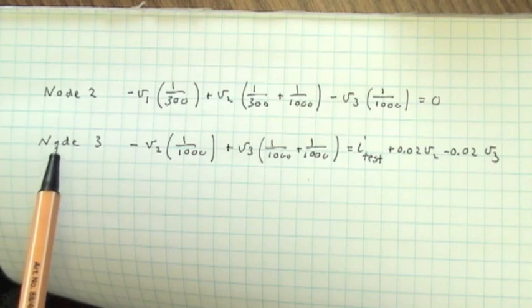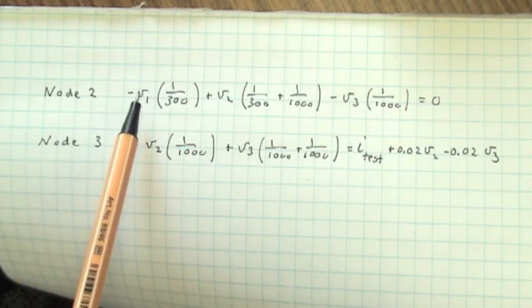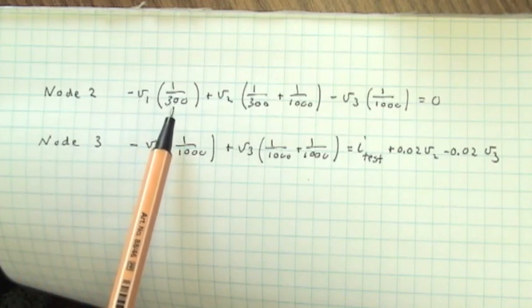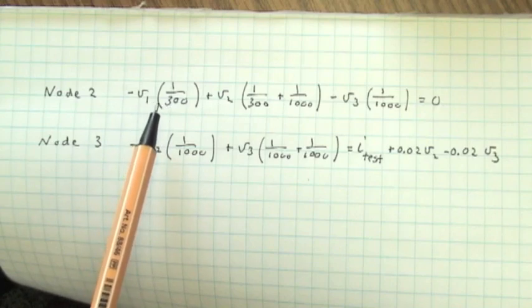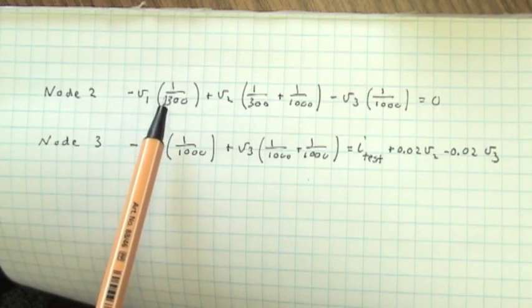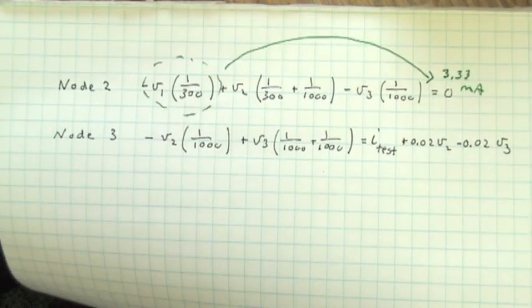V1, we already know, is equal to 1 volt. So 1 volt divided by 300 ohms is 3.33 milliamps. We can take that term to the right-hand side of the equation. As illustrated here, let's turn our attention to node 3.